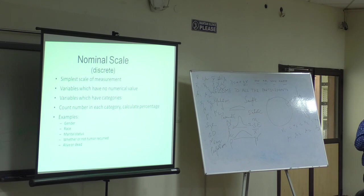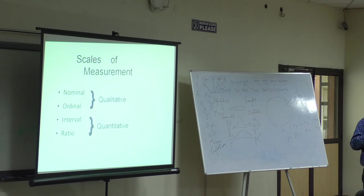I am talking about nominal, ordinal. What am I calling it as? Qualitative. And I am calling interval, ratio as quantitative. For qualitative, we use non-parametric tests. For quantitative, we use parametric tests.